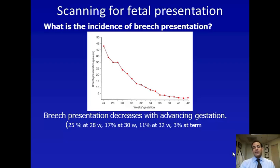We're going to talk about the epidemiology of breech presentation. As you can see from this graph, as gestational age increases in the third trimester, the incidence of breech presentation decreases. By 36 to 37 weeks, approximately 3 to 4 percent of babies are in breech presentation, as outlined at the bottom of the graph. At 28 weeks, approximately a quarter of all babies are breech.